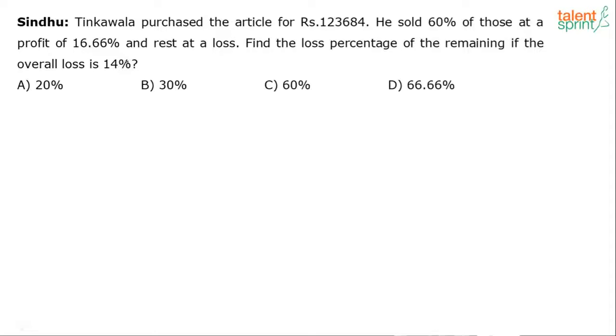So somebody by name Tinkawala has purchased some articles. Actually, it's not the article, it is articles, because then he says 60% of those. So meaning there are more than one article. So 60% of these articles are sold at a profit of 16.66% and the remaining are sold at a loss.